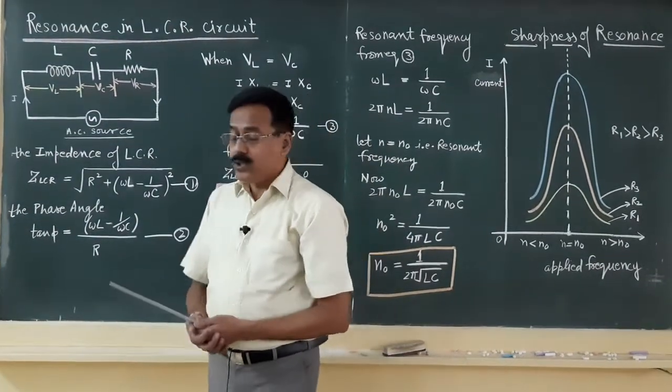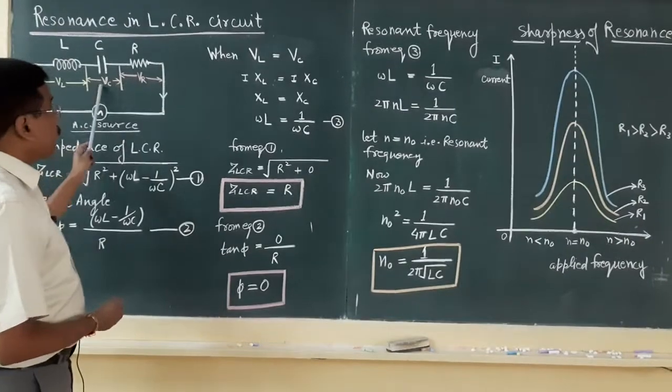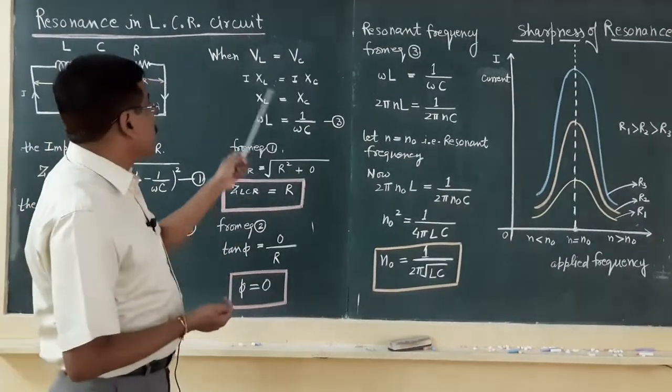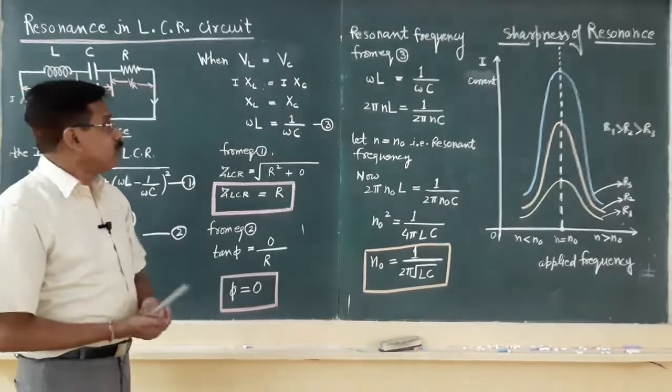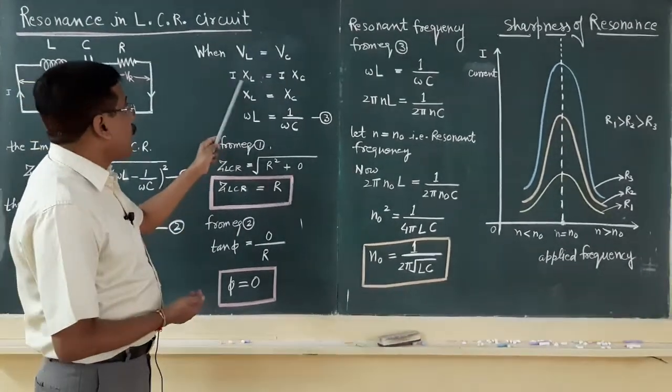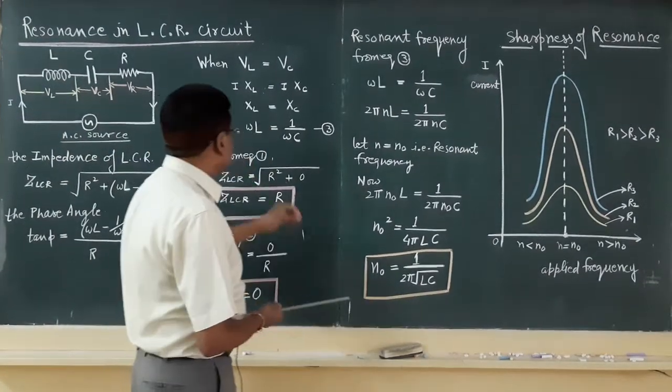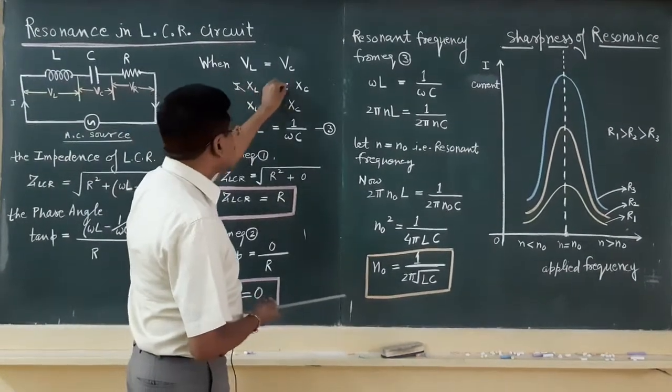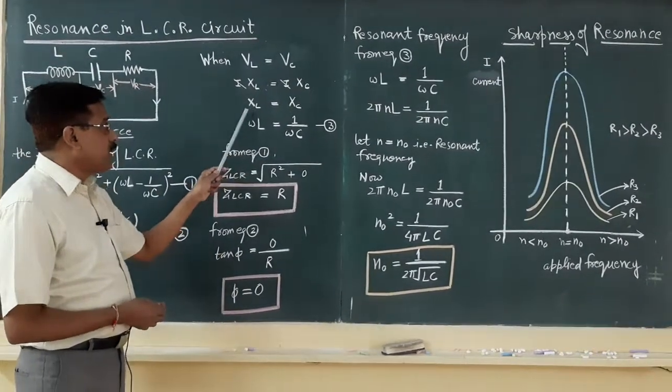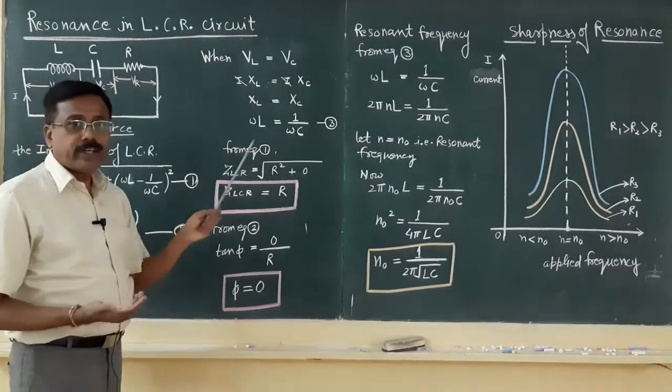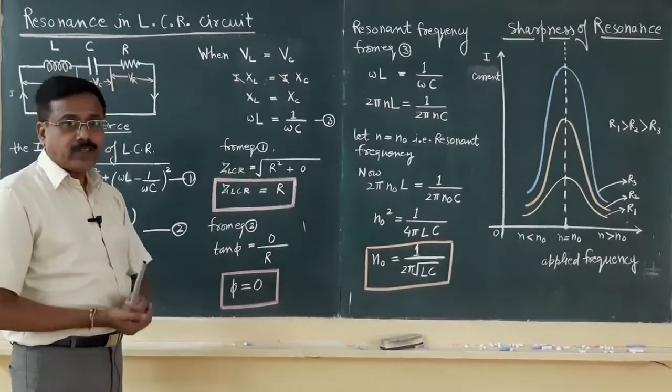For resonance we should have potential drop across inductor and capacitor equal, that is V_L should be equal to V_C. Using Ohm's law you can say I X_L equals I X_C, or in this expression I cancels out, then X_L equals X_C. What is X_L? Omega L, inductive reactance. What is X_C? 1 by omega C, capacitive reactance.